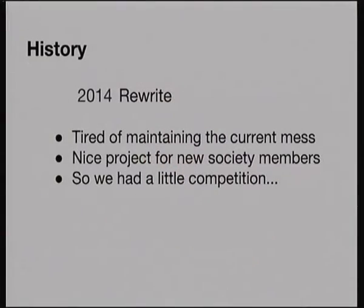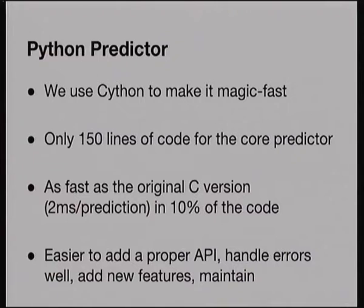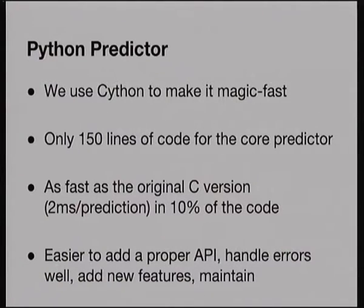We had a small competition to rewrite the whole predictor in a few different programming languages, just to see what would be quick and work well. We rewrote it in Python two different ways, in C++, in Go, and in Haskell, and compared all of them. In the end we decided to use Python. The Go version was nice but has an awful bug where it can only manage a four-gigabyte dataset, so it can only predict a small section of the world — a fundamental flaw in the language. The Haskell version was beautiful and very functional and pure, but ran dog slow — about half a second per prediction, compared to our benchmark of about two milliseconds for the C version.